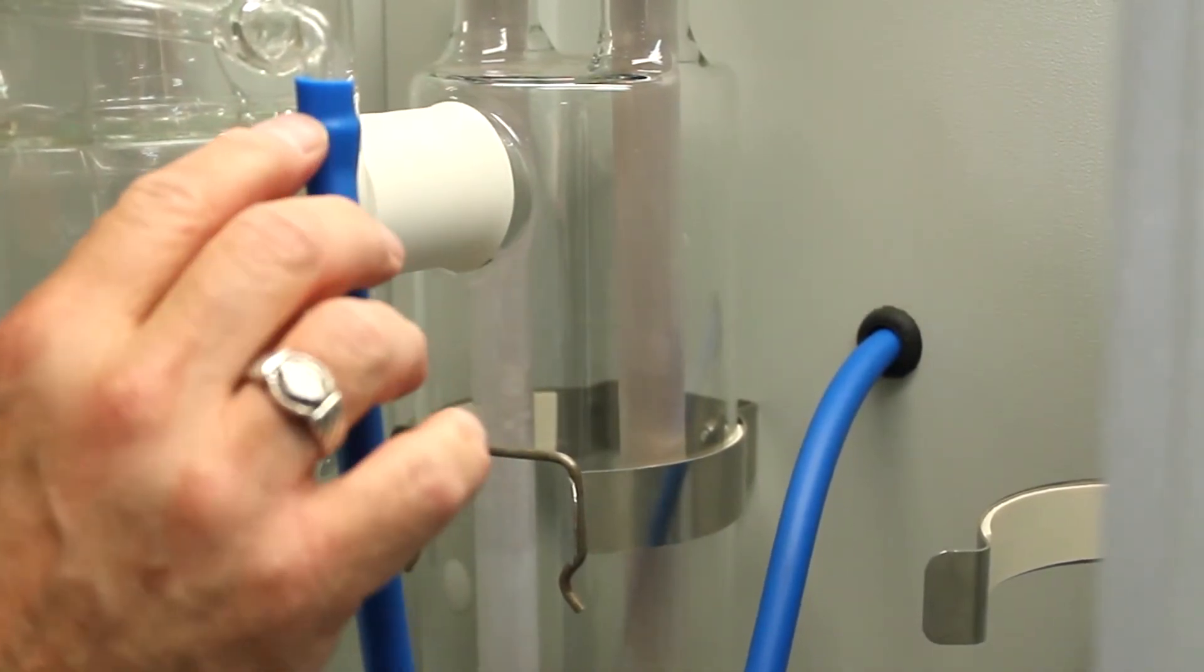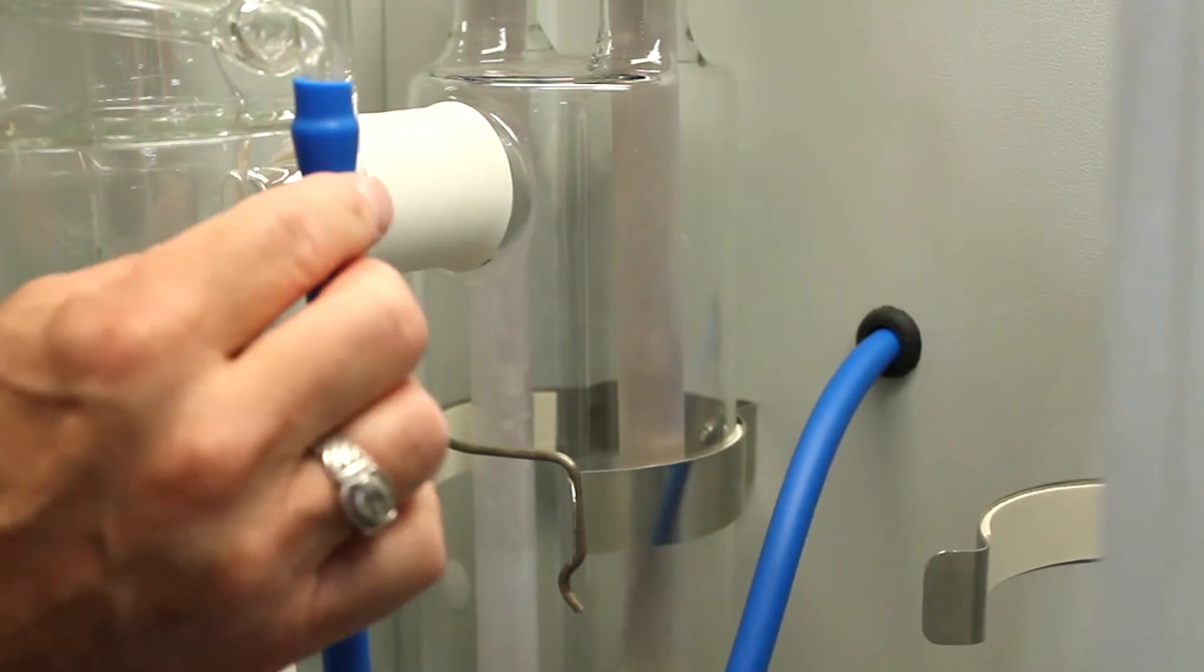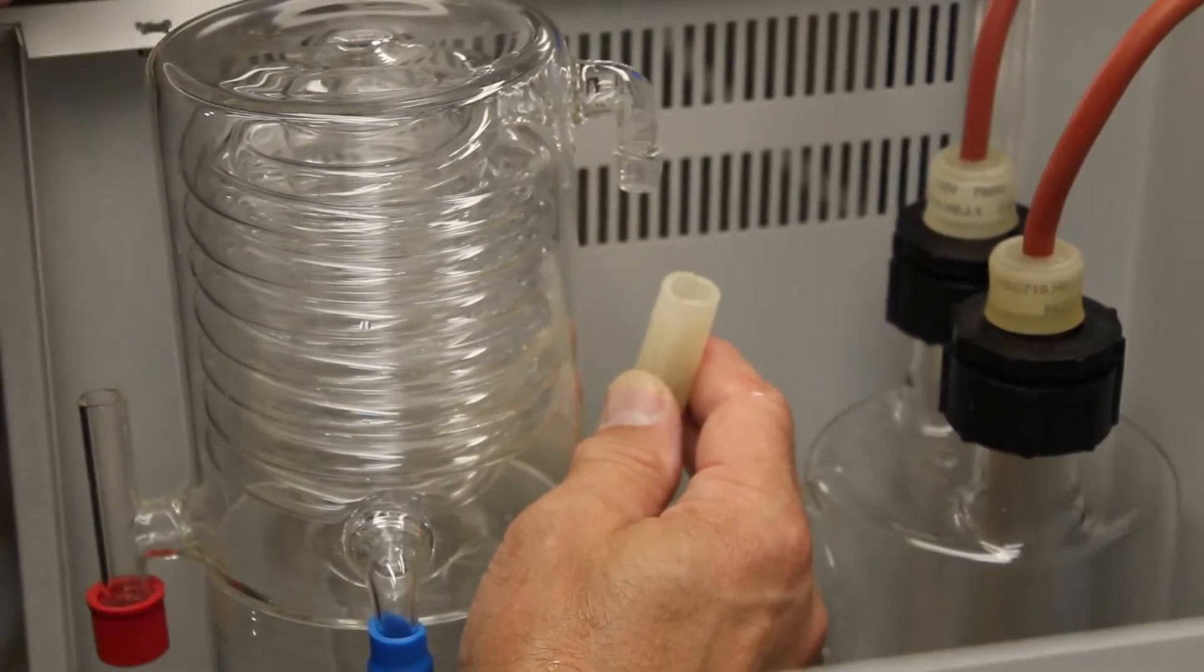Slide the tubing up in there to give it a little bit more ease of installation. Up above the ridge, a little bit, a quarter inch is all you need. That'll definitely hold the tube in place. Now that we have the inlet tubing connected, we're going to connect up the outlet tubing from the condenser.